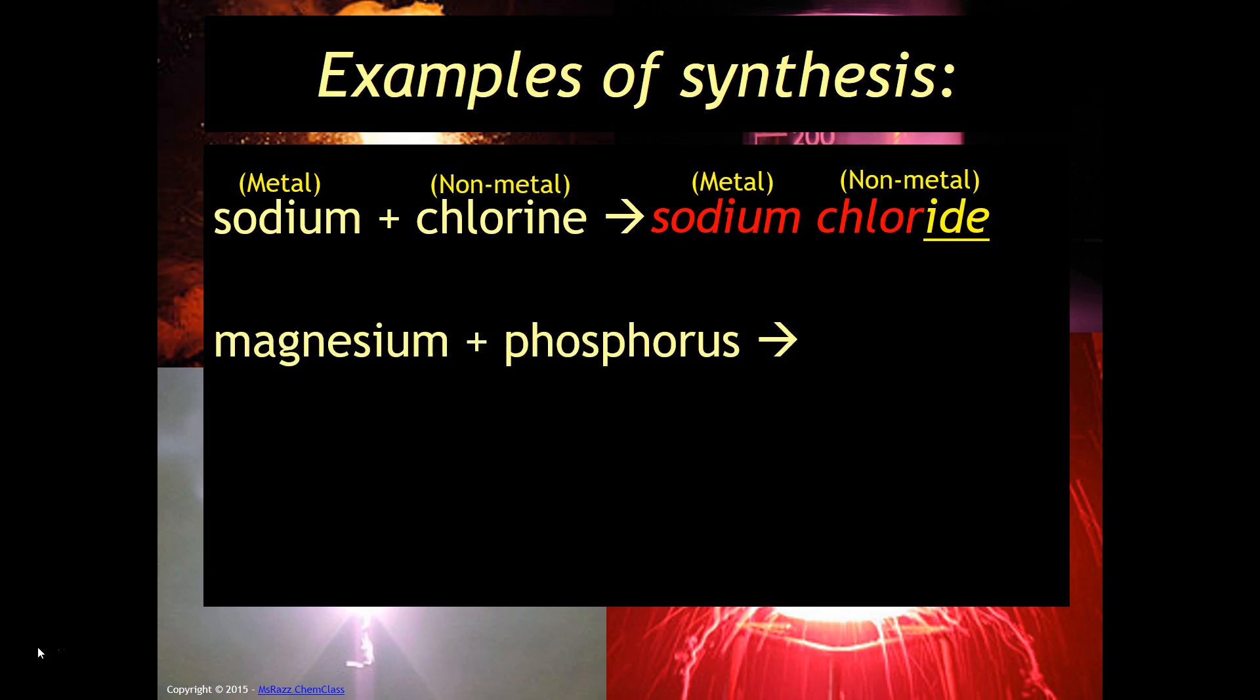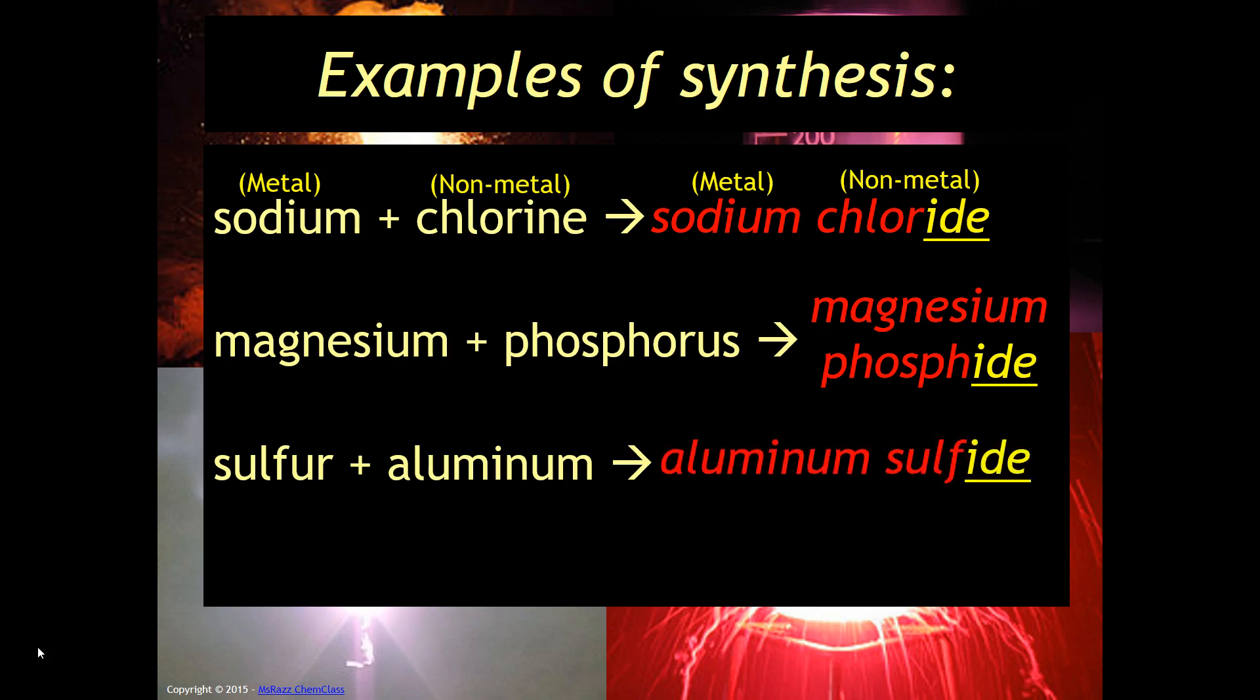Here's another example, magnesium plus phosphorus. Magnesium plus phosphorus would give you, again, magnesium phosphide. So just to emphasize, you want to always change the ending of the nonmetal to IDE. And then finally, you had sulfur plus aluminum. Notice aluminum is the metal and sulfur is the nonmetal. So you're going to get aluminum sulfide.